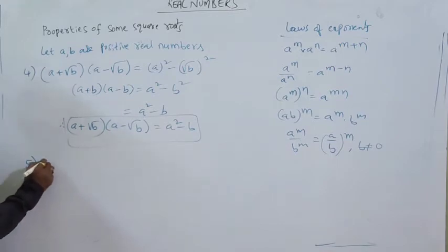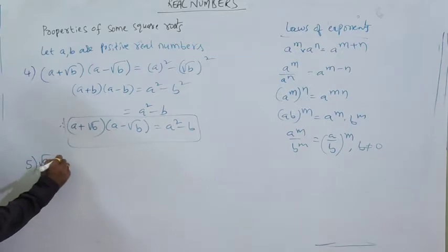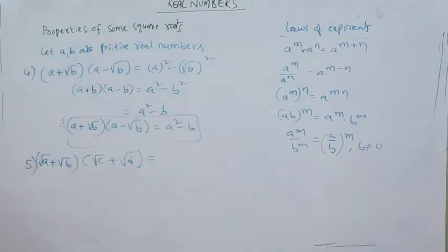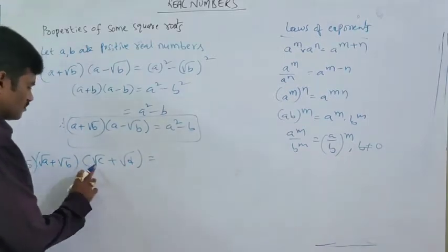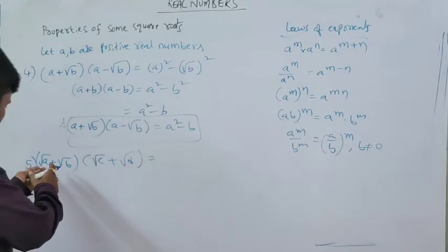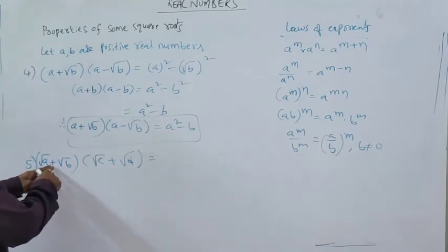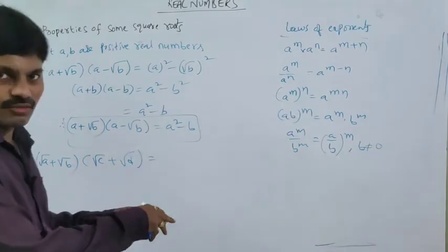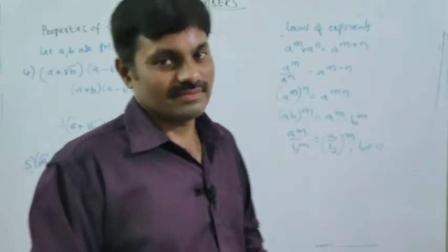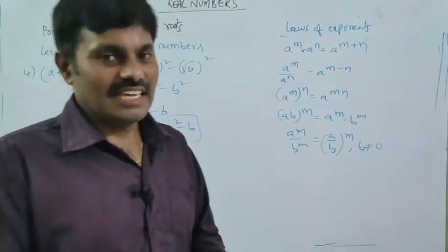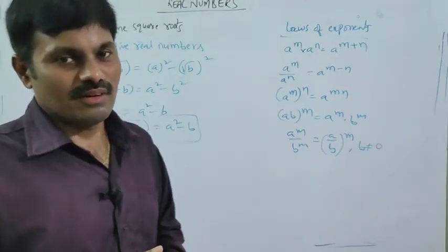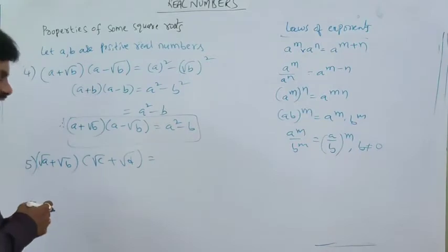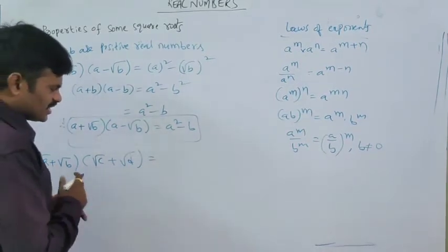The fifth property: root A plus root B into root C plus root D. To multiply these two binomial expressions, we apply the distributive property. The distributive property states that A into B plus C can be written as AB plus AC — multiplication over addition. So here we apply the distributive property to multiply root A plus root B by root C plus root D.